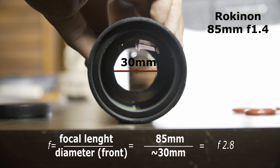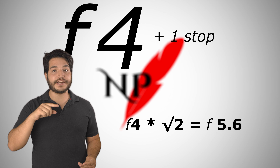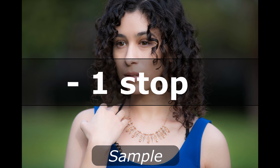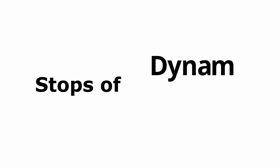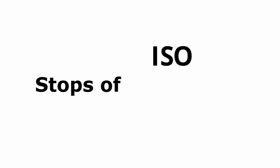One stop, or f-stop, refers to a factor of root 2 change in the f-number and changes exposure by a factor of 2 — that is, twice as bright or twice as dark. We also adopted this convention when talking about exposure in general, when talking about dynamic range or even shutter speed, ISO, and even noise.